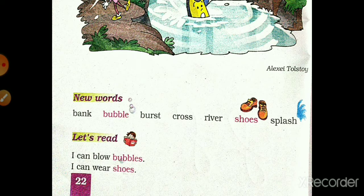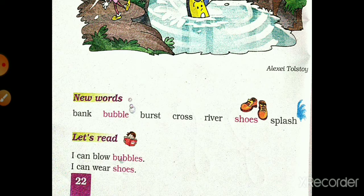Second is bubble — B-U-B-B-L-E. Bubble means paani mein jo bulbuley hote hain woh. Third is burst — B-U-R-S-T. Burst means phootna. Iske baad cross — C-R-O-S-S. Cross means paar karna — ek kinaare se doosre kinaare tak jo paar karte hain usko bolte hain cross.